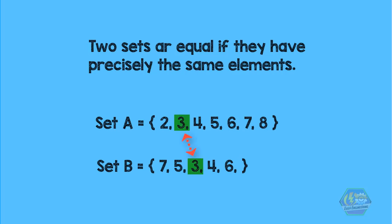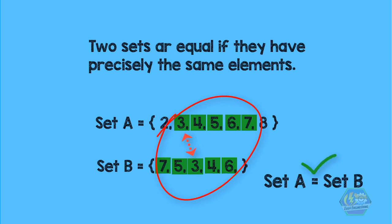They both contain 3. They both contain 4, 5, 6, and 7. And we have checked every element of both sets. So that means they are equal. Remember that the equal sign is used to show equality. So we write A is equal to B.